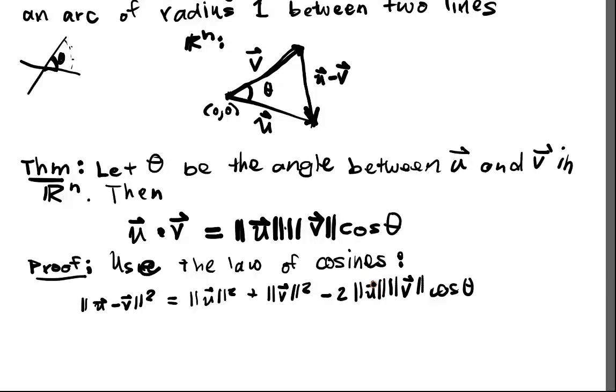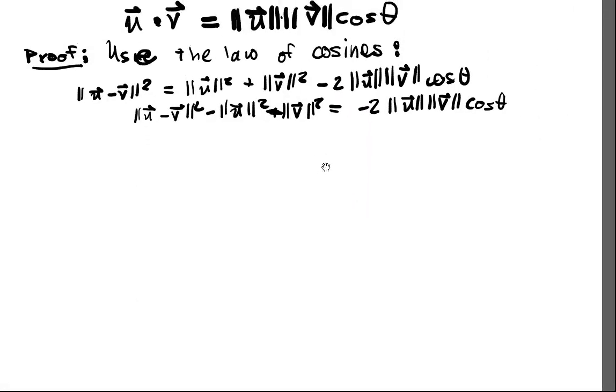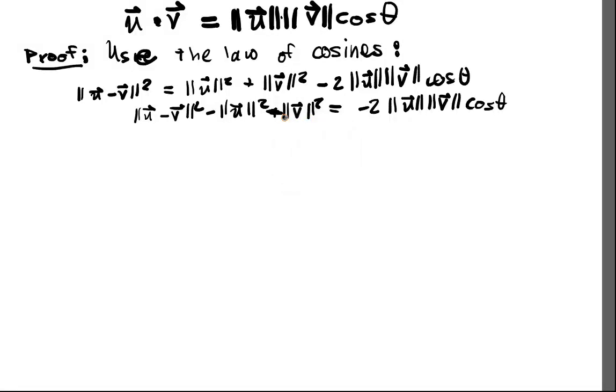So we're going to fix it so we get that on one side. So in order to do that, the first thing is we subtract off the length of u squared and the length of v squared. And that'll give us u minus v squared minus u squared plus v, and that'll be minus v squared is equal to negative 2 length of u times the length of v times the cosine of theta.